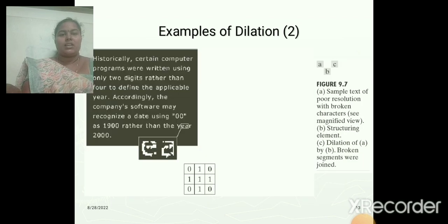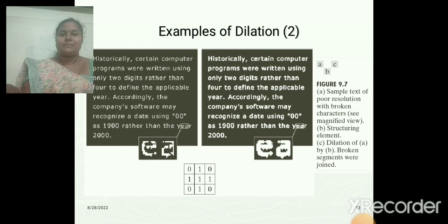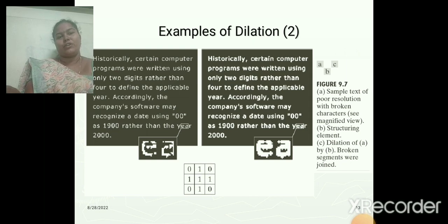This is another example of the dilation operation. The given input image is dilated — that is, the border of the object is dilated using the structuring element, which is a 3×3 matrix. We can get more accurate results, and there is a clear visible difference between the input and output image.